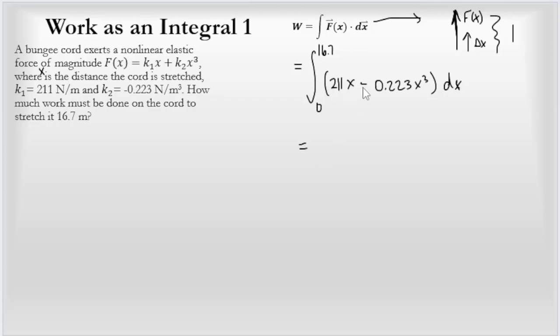I'm going to do the power rule integration. This is a power of 1, I want to increase it to 2, so I'm going to have to divide the coefficient by 2: (211/2)x². This is a 3, I have to go up to 4, so I'm going to get 0.223 divided by 4, x⁴. Then I am going to do that over the interval of 0 to 16.7, which makes this pretty easy.